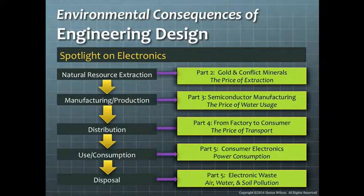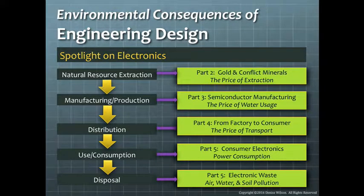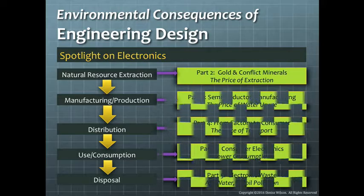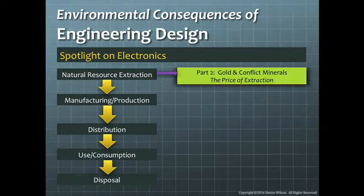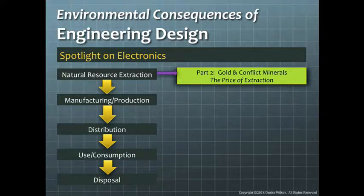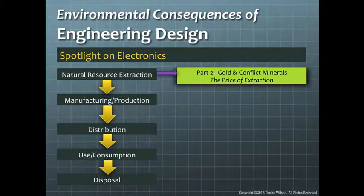Natural resource extraction is often considered the cradle of a technology. It is the first step in the evolution of materials into products, where raw materials are collected so that they can then be processed and assembled into products for distribution and sale. At this stage of a product life cycle we will look at what happens when natural resources are in such high demand and low supply.